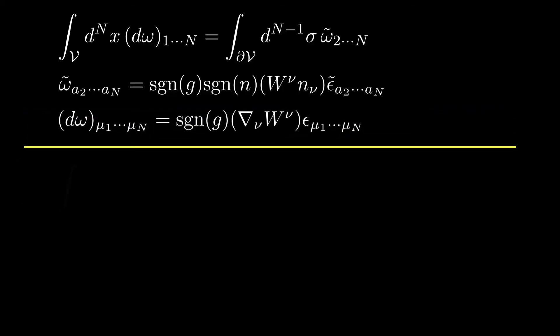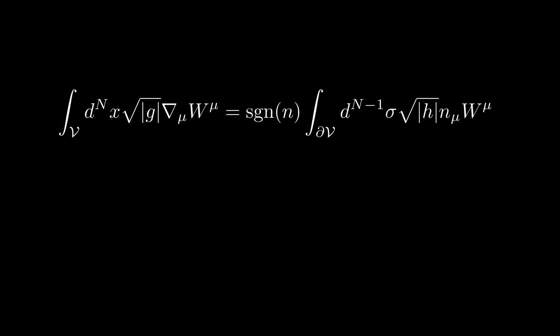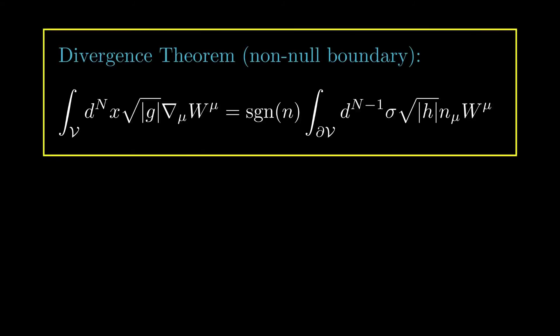We're finally ready to write Stokes' theorem in terms of elementary integrals. Combining the results shown, we obtain an expression that simplifies to a result relating the volume integral of the divergence of the vector W to the boundary integral of the normal component of W. For completeness: V is an n-dimensional region of the manifold, g is the determinant of the metric on V, h is the determinant of the metric on the boundary partial-V, n is the outward-pointing unit normal, and sign-n is plus 1 or minus 1 depending on whether n is space-like or time-like. This result is known as the divergence theorem.